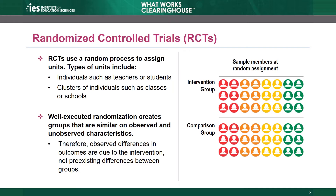Ideally, randomization should create similar groups, meaning groups that are similar on both observed and unobserved characteristics. An observed characteristic is something we can measure or record, such as gender or test scores, whereas an unobserved characteristic is something such as motivation that is not or cannot be directly measured. When groups have similar characteristics at the beginning of a study, we have confidence that any differences in outcomes between the groups are due to the intervention. When groups are not similar, pre-existing differences could be responsible for the outcomes. This is the advantage of randomized control trials — we can be reasonably confident that the intervention caused the measured impact.